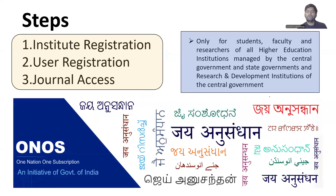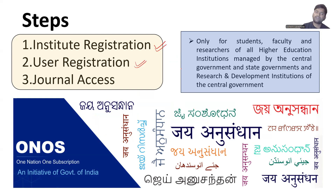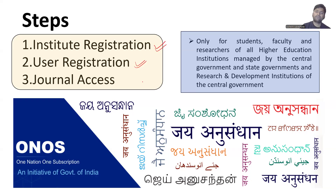So how to use it? First, you have to get your institute registered — if not already registered — on the ONOS portal. Then users can register themselves, and after they are registered, the admin of the institute will have to verify all these users, after which they will be able to access the journals.